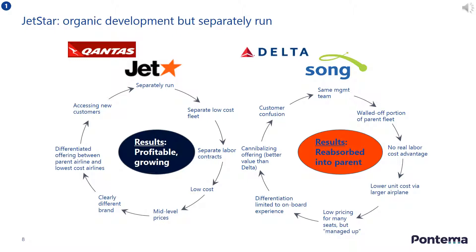By contrast, the low cost airline Song, once owned by Delta, was unsuccessful because it was run by the same management team as Delta, did not have a separate low cost fleet of aeroplanes, and did not have a clear differentiation story to Delta, which caused confusion for customers. The end result was that Song was reabsorbed into the Delta parent organization.